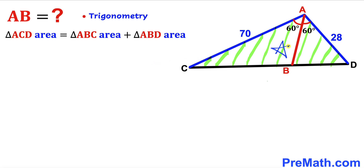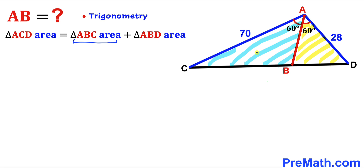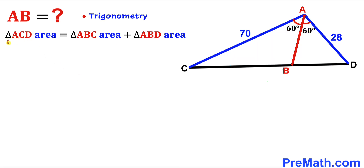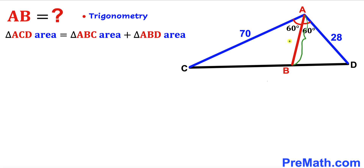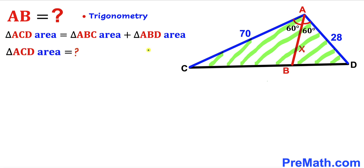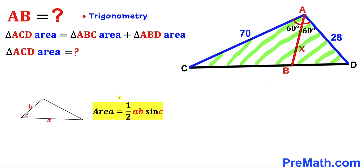Here's our first step — let's make an observation. The area of the bigger triangle ACD equals the area of triangle ABC plus the area of triangle ABD. Our task is to calculate all three of these areas. I'm going to label the angle bisector AB as x.